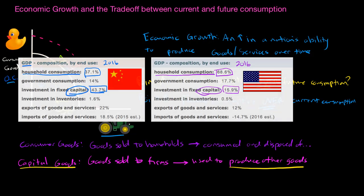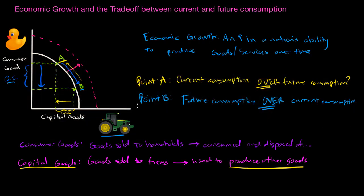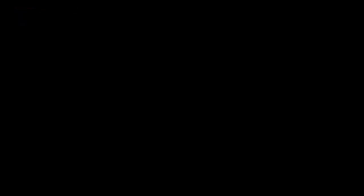Economic growth has many causes. Economists have been discussing the sources of economic growth for over 200 years. Increases in population, education level, skill level, technology, and availability of resources are all significant sources of economic growth. However, a country's decision as to how it allocates its resources today also impacts its rate of economic growth.